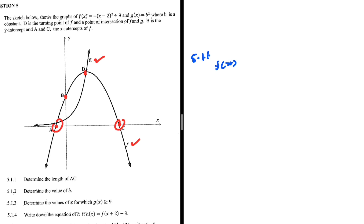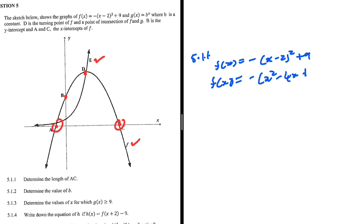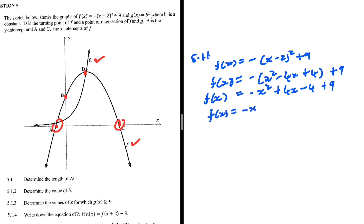So we have f of x, which equals minus (x minus 2) squared plus 9. Let's expand: (x minus 2) squared gives us x squared minus 4x plus 4, and then plus 9. Multiplying out by the minus sign, we get f of x equals minus x squared plus 4x minus 4 plus 9. So f of x equals minus x squared plus 4x, and then minus 4 plus 9 is plus 5.